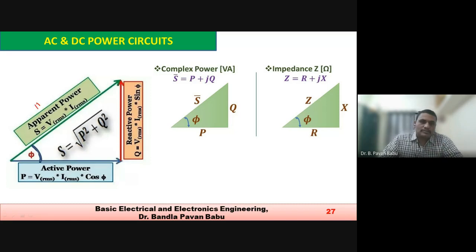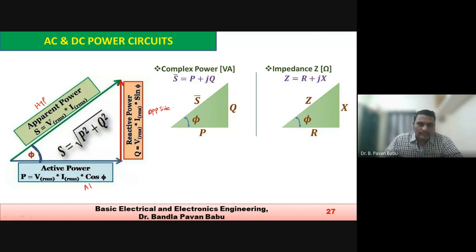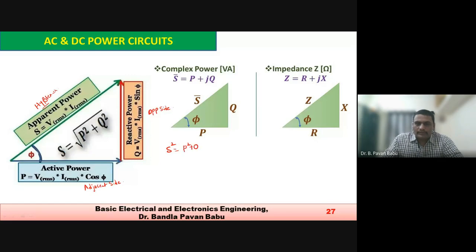This is the hypotenuse, this is the opposite side, and this is the adjacent side. So this is the relation as per the right angle triangle: S² = P² + Q², so the magnitude of S equals the root of P² + Q².